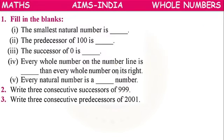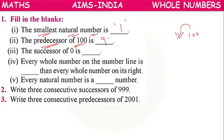Let us see an exercise on what we have learned. The smallest natural number is 1. The predecessor of 100 is 99, because predecessor means the immediate before number. The successor of 0 is 1, because successor means the number that comes immediately after.